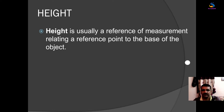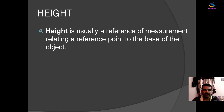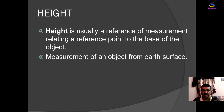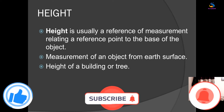Height is usually a reference of measurement relating a reference point to the base of the object. In other words, it is the measurement of an object from the earth's surface — for example, the height of a building, a tree, or a human being.